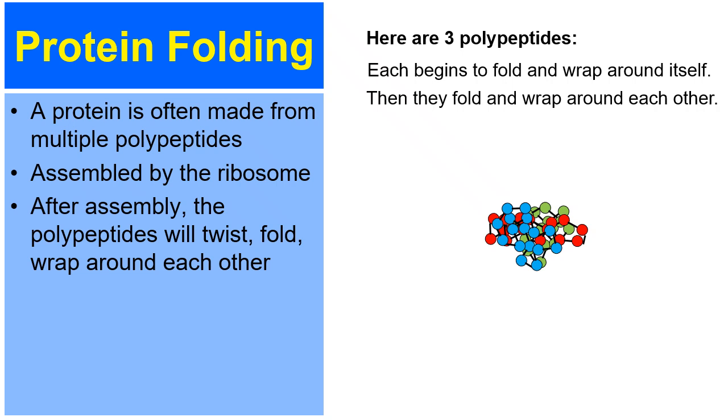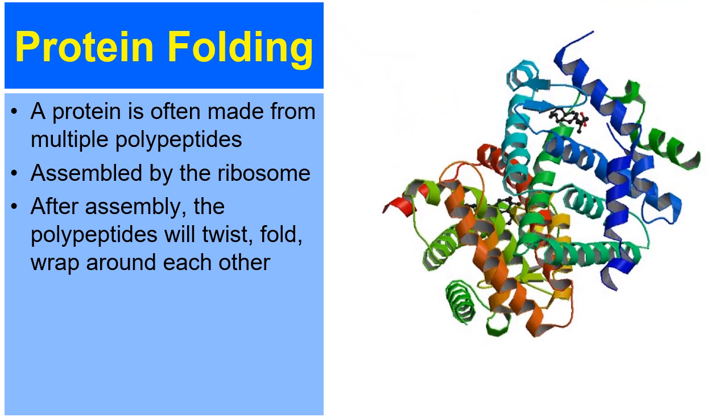Now, in this next picture right here, this is actually a computer model of an actual protein. And see, each colored ribbon here, you can see are the various polypeptides that are twisted and folded and wrapped. But the entire structure in the entire picture, that's the protein.